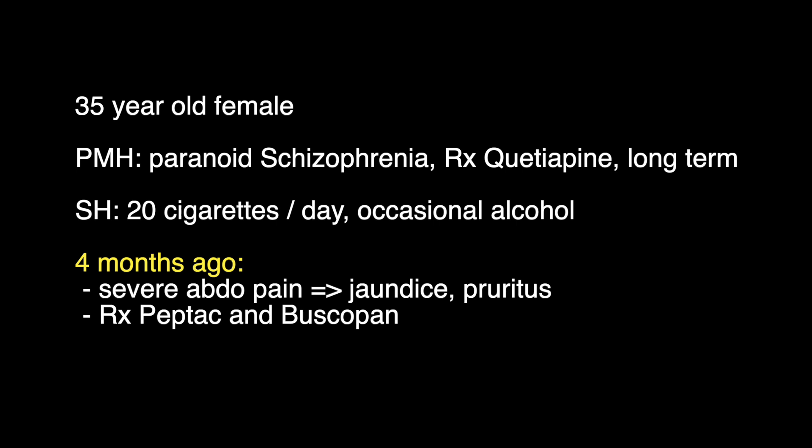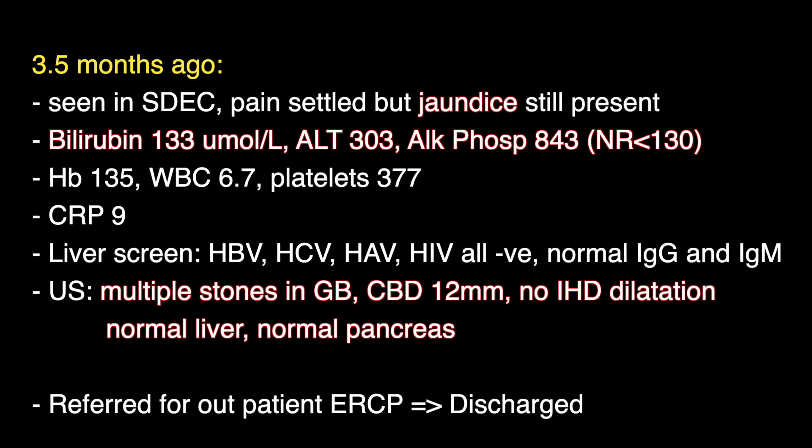The patient is a 35 year old lady with a history of paranoid schizophrenia for which she was taking long-term quetiapine. She smoked 20 cigarettes a day and drank alcohol very occasionally. Four months ago she developed severe abdominal pain and subsequently developed jaundice and pruritus a week later. She self-medicated with Peptac and Buscopan. Two weeks later, that is three and a half months ago, she presented to the SDEC unit — the same day emergency care unit — with ongoing jaundice. The abdominal pain had settled.